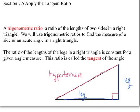Let's introduce what tangent, sine, and cosine are. To start out, a trigonometric ratio is a ratio of the lengths of two sides in a right triangle. We will use trigonometric ratios to find the measure of a side or an acute angle in a right triangle. The ratio of the lengths of the sides in a right triangle is constant for a given angle measurement, and that ratio is called the tangent of the angle.